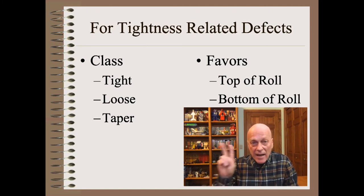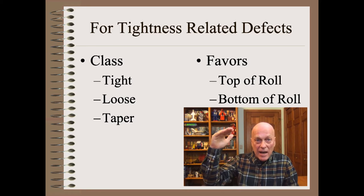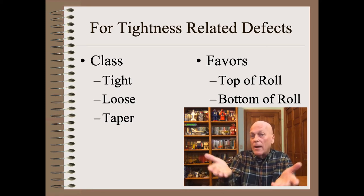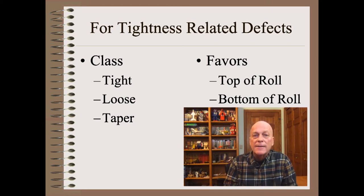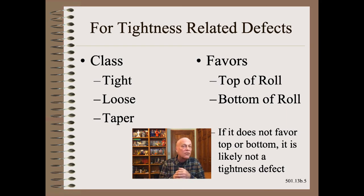The second is whether the defect favors the top of the roll or the bottom of the roll, which you should already know quite readily. Note that if it does not favor the top or bottom of the roll, then it is very likely not a tightness-related defect for reasons that we don't have time to discuss here.